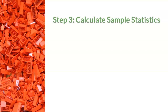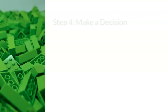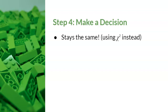Step 3, the red Lego, is to collect data and calculate sample statistics. This step requires calculation of the chi-square for goodness of fit, which you learned in the Nearpod lesson. Step 4, the green Lego, is making a decision about whether the study worked or not. This step stays the same — in this test we are using chi-square instead.